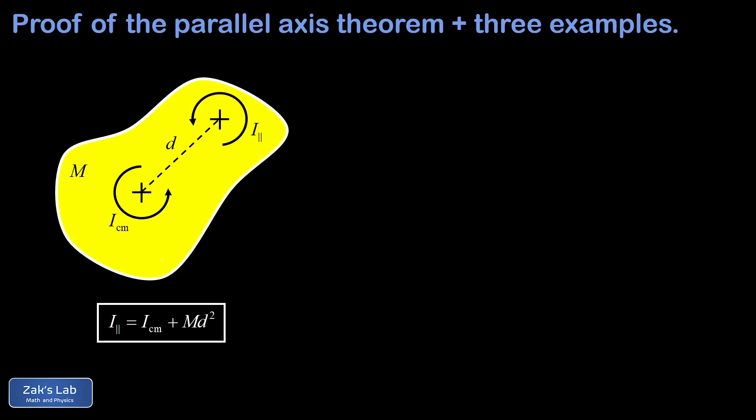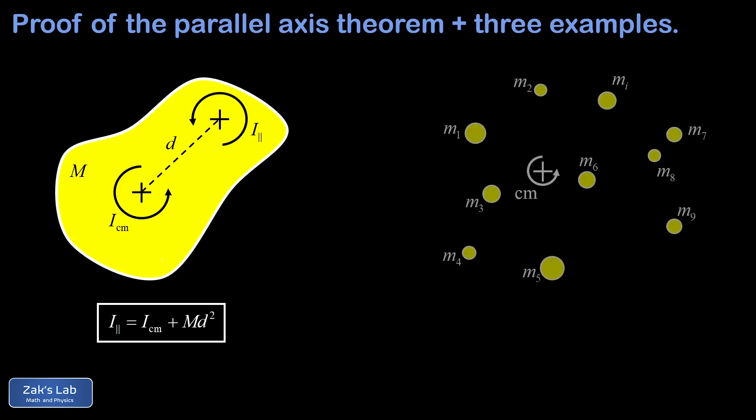In other words, we're adding a term that acts as if we have an extra point mass of big M located at a distance d from the parallel axis. To set up the proof, we're going to look at what I call a particle swarm, which is typical of classical mechanics proofs.